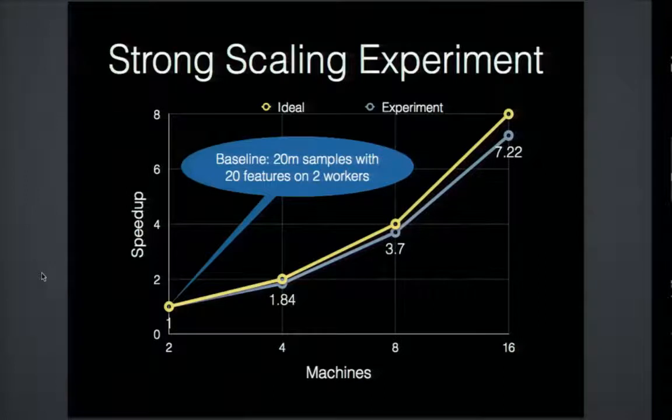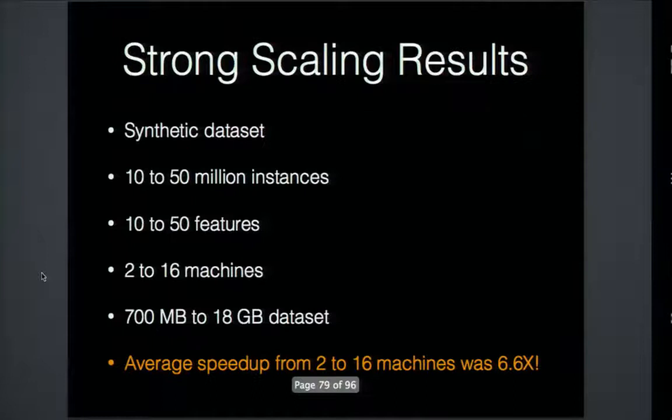Our experimental results are not far from ideal — within about 10% of the ideal curve. The discrepancy is due to additional communication overhead as computation is distributed across more machines. We performed several strong scaling experiments on a synthetic binary classification data set, with data set sizes from 10 to 50 million instances, 10 to 50 features, and 2 to 16 machines — occupying 700 MB to 18 GB in memory. The average speed-up going from 2 to 16 machines was 6.6x, compared to an ideal of 8x.